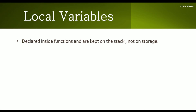So to summarize: local variables are declared inside functions and are kept on the stack, not on storage. There are actually three types of memory areas in Solidity: stack, storage, and memory. We'll see the differences between stack, storage, and memory in upcoming videos. Local variables are kept on the stack, while state variables are kept on storage, which is why state variables cost gas — storage permanently stores all your state variables.